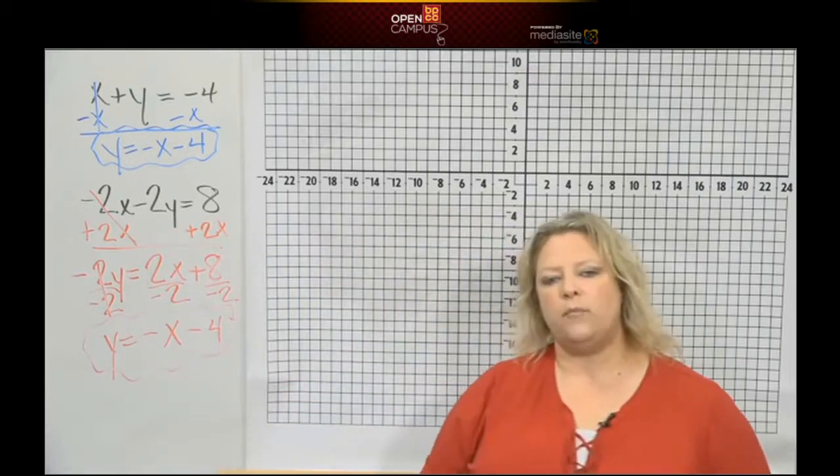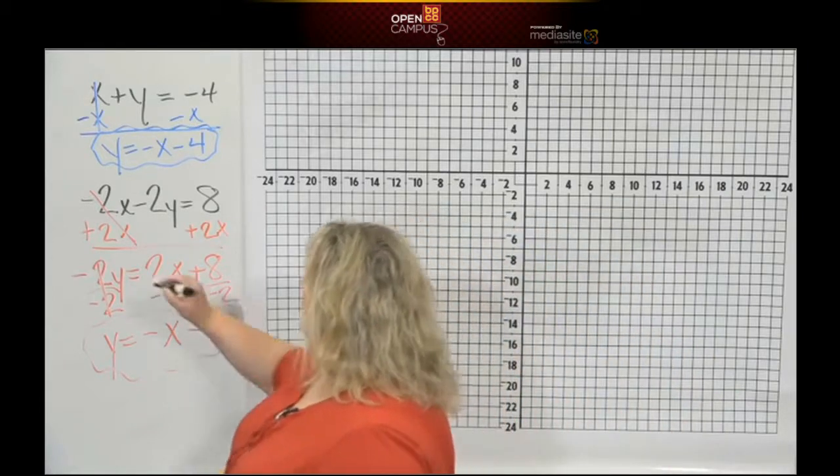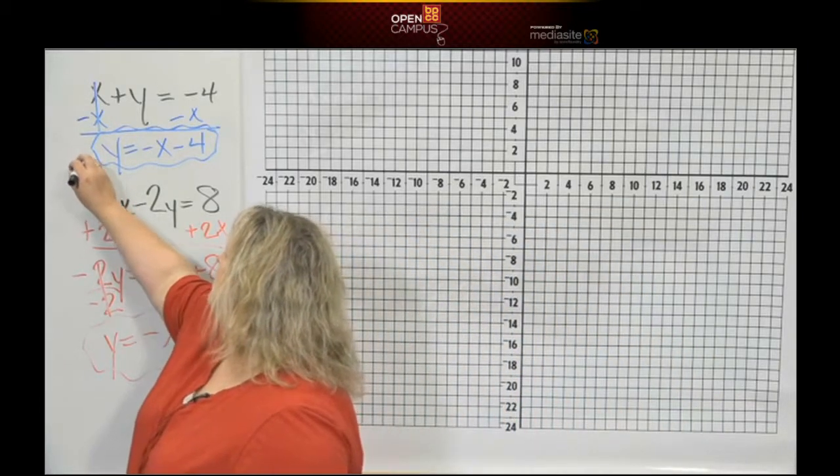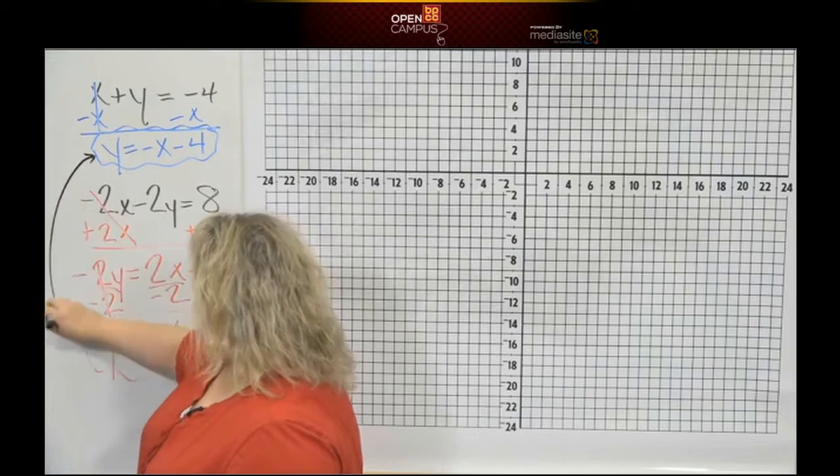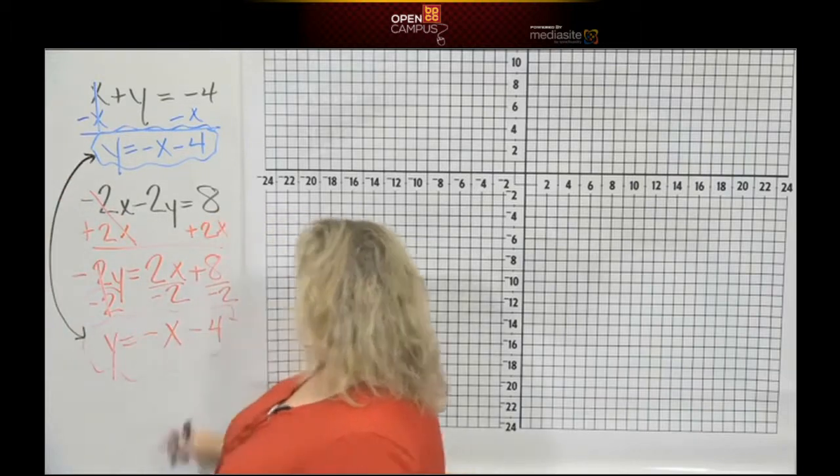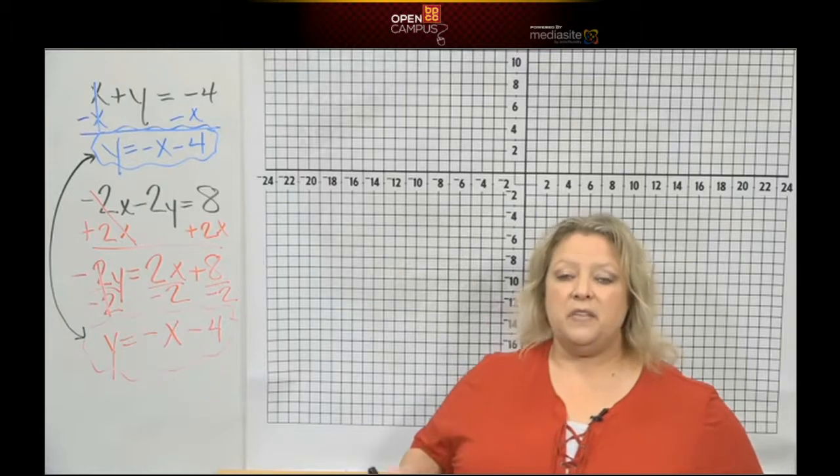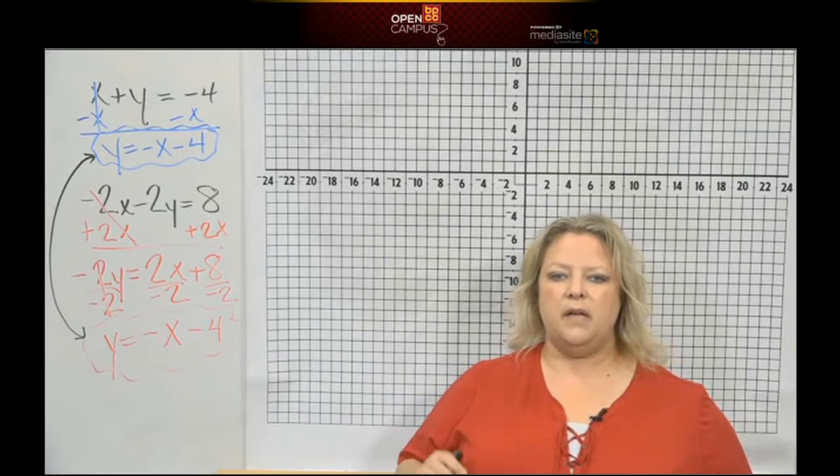Now I want you to look at them real quick before we go and graph them. Y equals negative 1x plus 4, line 1. Y equals negative 1x minus 4, line 2. They're the exact same line.